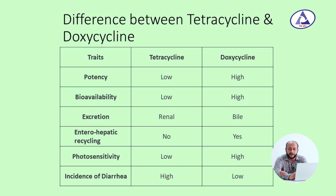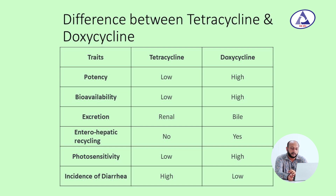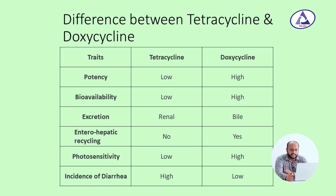Comparison between tetracycline and doxycycline: tetracycline has lower potency while doxycycline has higher potency and higher bioavailability. Tetracycline is excreted mainly via the renal route, whereas doxycycline is excreted via bile with enterohepatic recycling. Photosensitization is more pronounced with doxycycline, while diarrhea is more common with tetracycline.